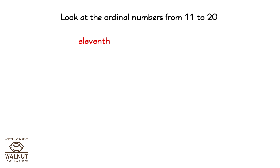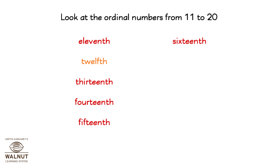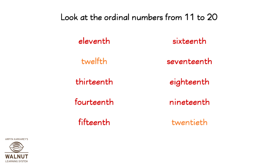Look at the ordinal numbers from 11 to 20: 11th, 12th, 13th, 14th, 15th, 16th, 17th, 18th, 19th, 20th. Look specifically at the numbers in orange. The spellings are not formed by just adding TH to the end of the word. You have to be careful when you spell these two numbers.